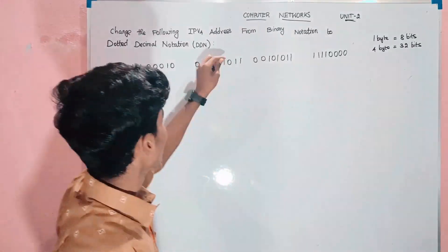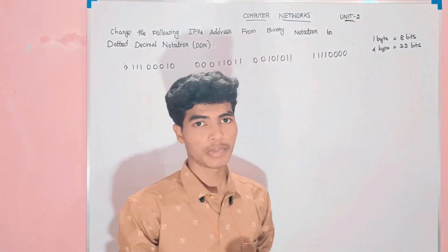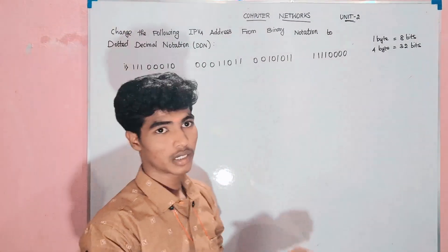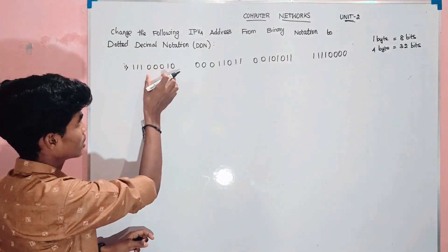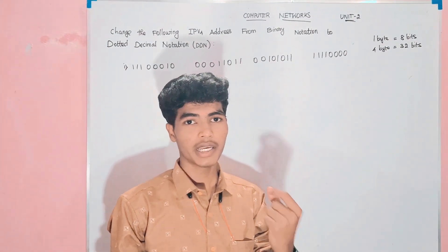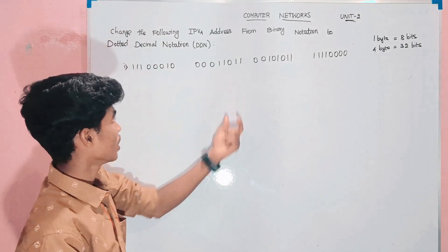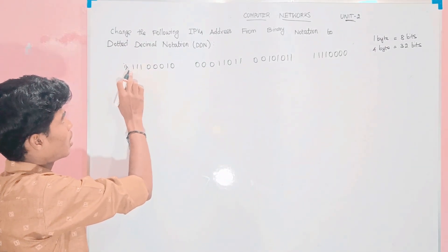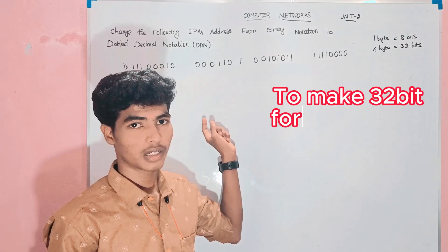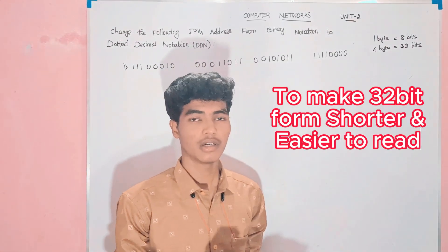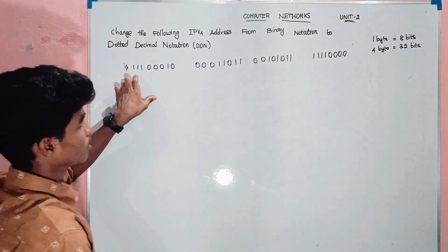So binary notation is binary notation. For example, that is the 32-bit address. It is easier to read if we say it is shorter. For example, we will use dotted decimal notation. If we ask the question, we will ask the first question.